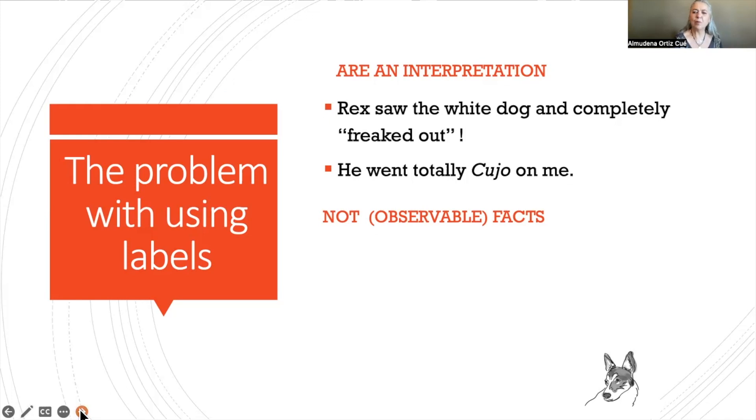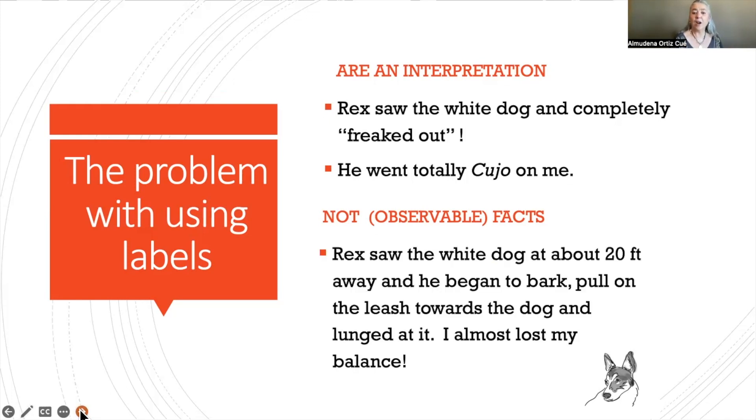Now let's look at observable facts. Rex saw the white dog at about 20 feet away, and he began to bark, pull on the leash towards the dog, and lunged at it. And as a result, the person almost fell or lost its balance. So here we have three different behaviors that are basically taking the place of the dog freaked out or the dog went kujo. Now we know exactly what the dog is doing.